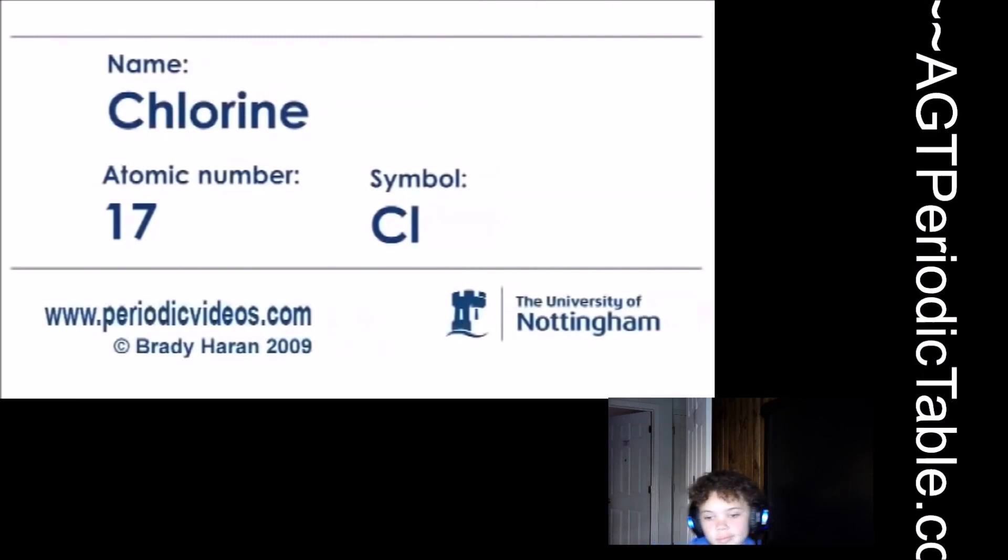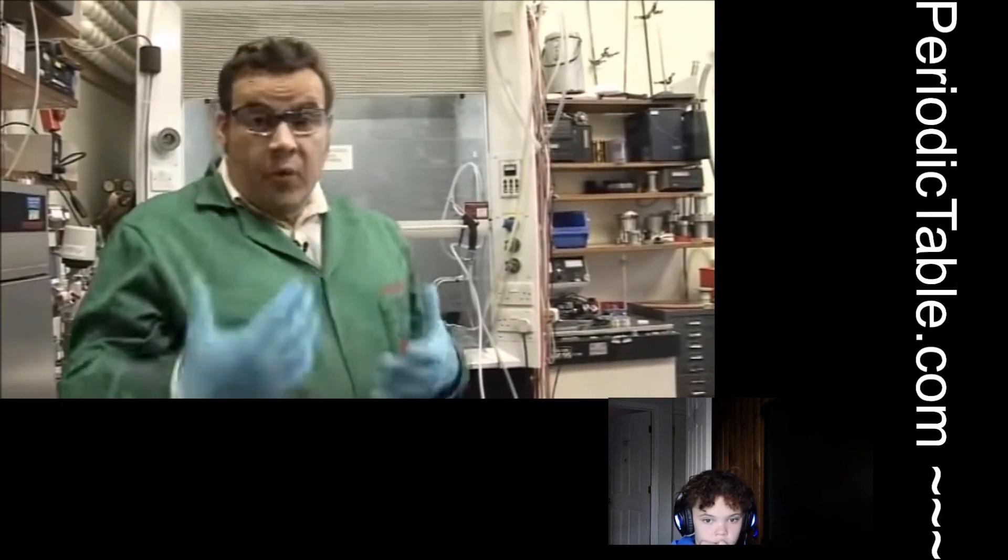Chlorine is an element that many people have heard of. It's a greenish yellow gas which consists of two Chlorine atoms bonded together, so it's Cl2. And it's much heavier than air, incredibly reactive, incredibly poisonous. Not a very nice compound at all.